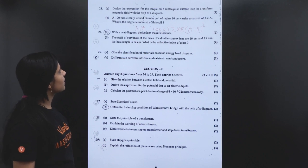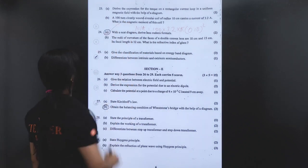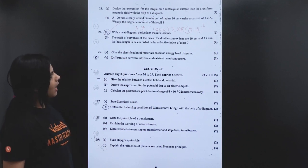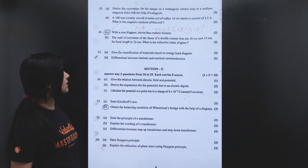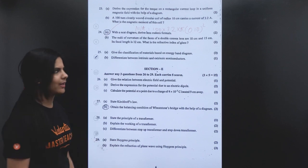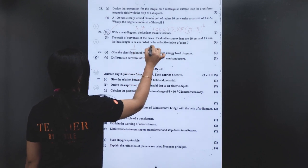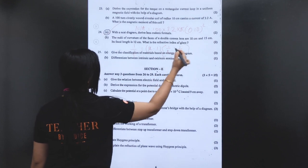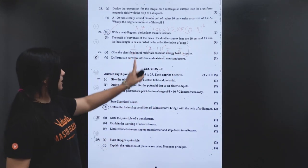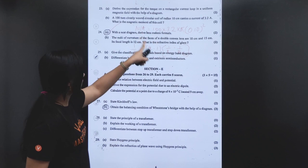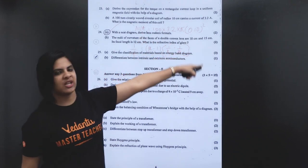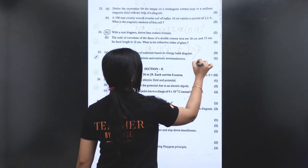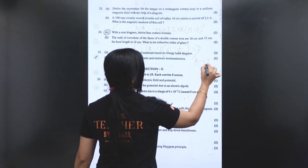With a neat diagram, derive the lens maker's formula. The radius of curvature of the faces of a double convex lens: R₁ = 10 cm, R₂ = 15 cm; focal length f = 12 cm. What is the refractive index of the glass? Using 1/f = (μ−1)(1/R₁ − 1/R₂), we get refractive index = 1.5.